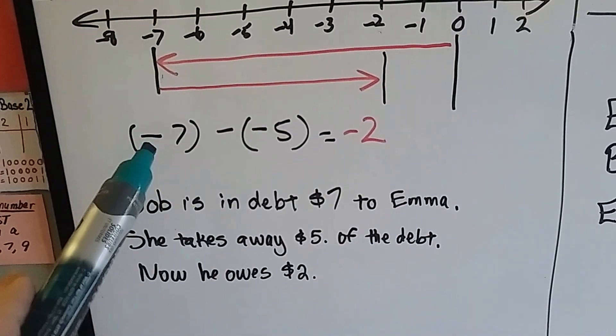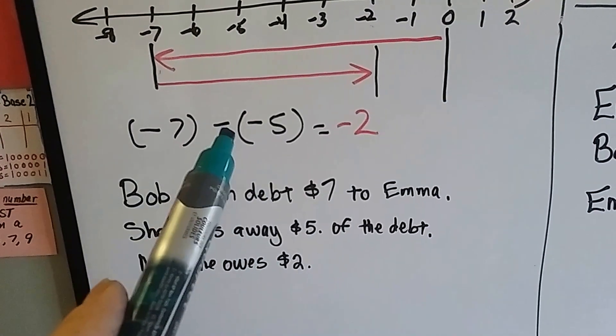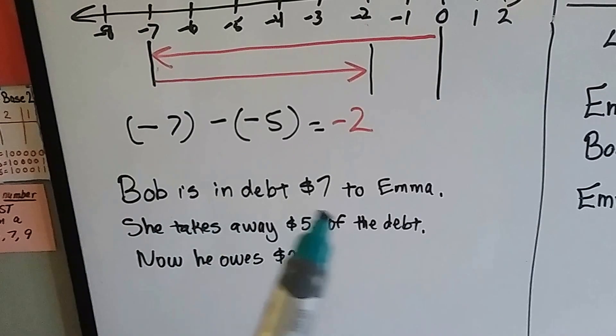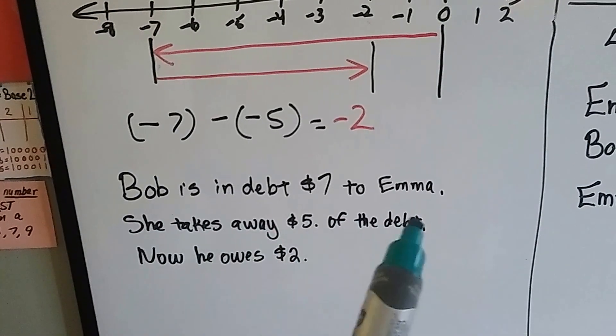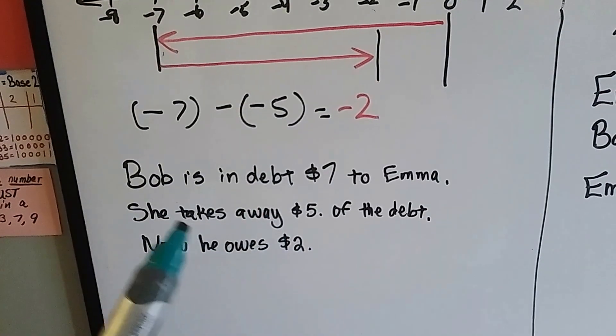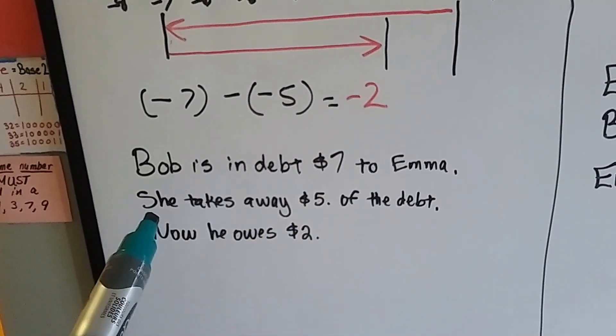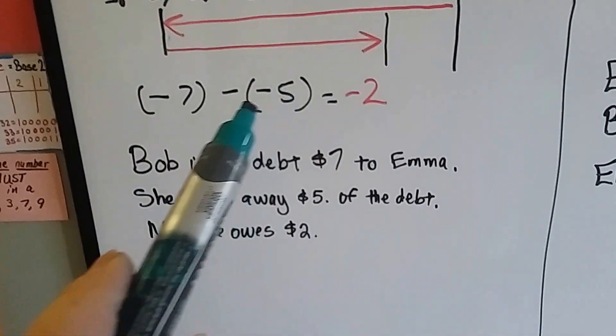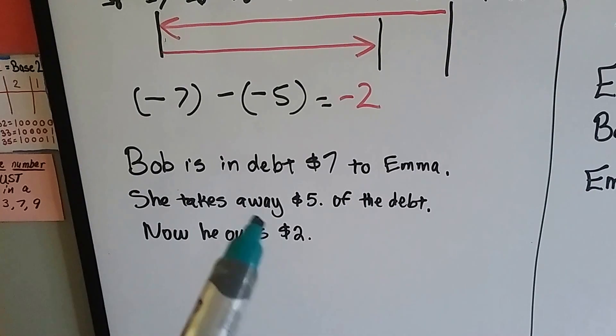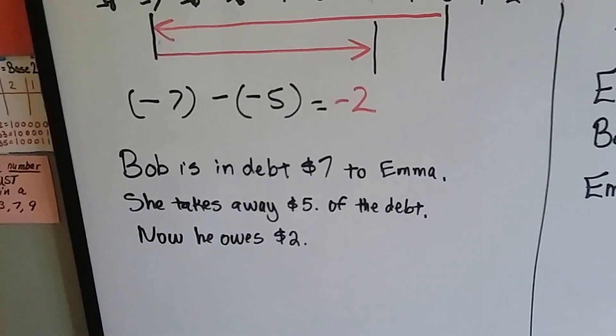Bob owes $7 to Emma. He's in debt $7 to Emma. But for some reason, Emma takes away $5 of the debt. Maybe he drove her somewhere and she said, you know what? You drive me to work and I'll take away $5 of that debt. And he was like, alright. So, now he only owes her $2. So, you can take away some of the debt. Now he owes her $2. But he's still in debt. He's still negative to her, but not as much.